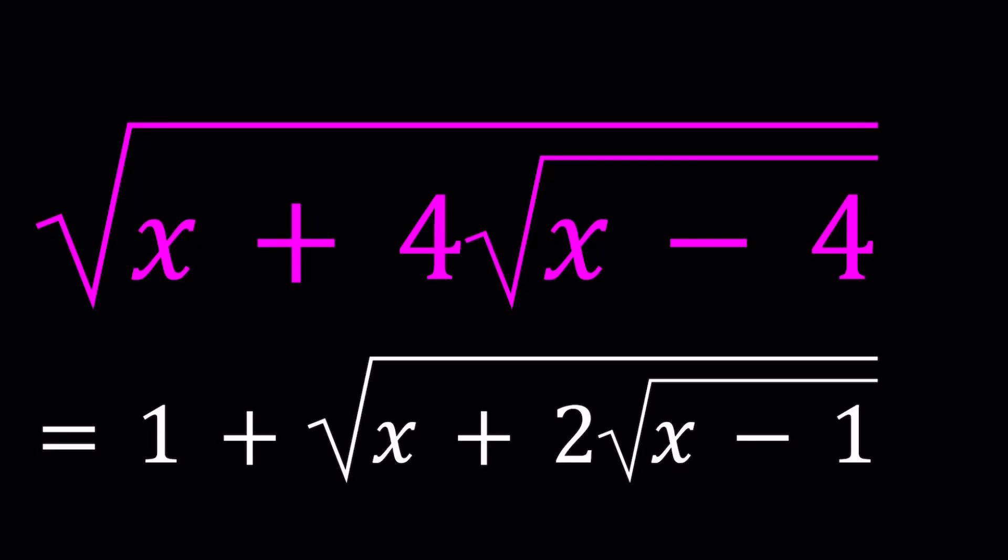Hello everyone. In this video we're going to be solving a nice radical equation. A very radical equation. We have the square root of x plus 4 times the square root of x minus 4 equals 1 plus the square root of x plus 2 times the square root of x minus 1.